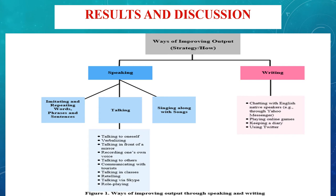Based on the data, we understood that participants enhanced their oral fluency by the aid of speaking and writing. As shown in the figure, there were different ways for participants to improve their oral fluency while speaking. The majority did so by imitating and repeating words, phrases, and sentences they heard in movies, series, talk shows, etc. Imitation and repetition also helped them attain native-like proficiency.